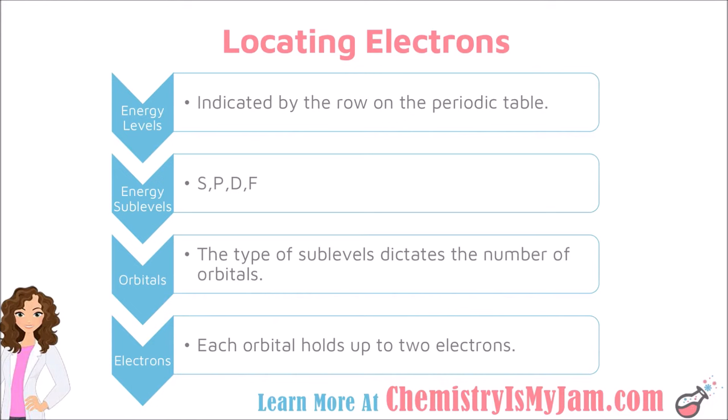Within those sublevels are orbitals, and the type of sublevel dictates the number of orbitals. For example, the S sublevel has one orbital while the P has three. Within the orbitals is where the electrons are located, and each one of those orbitals can hold up to two electrons. I am going to go through and spend a minute on each one of these different levels, and then we will look at how we can write electron configurations.